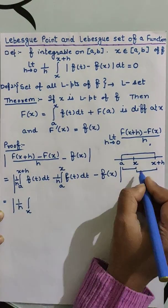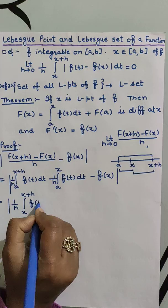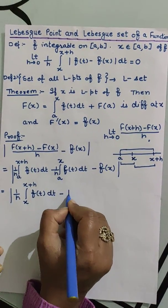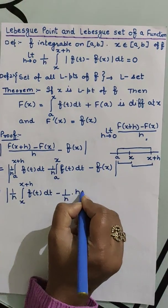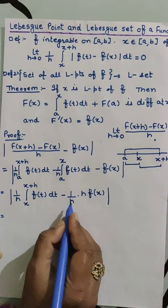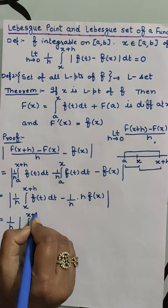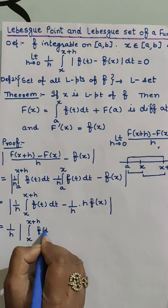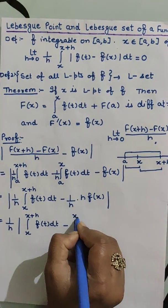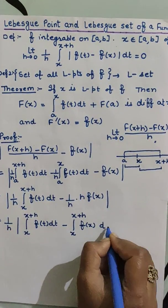x to x+h. So this is (1/h)∫[x to x+h] f(t)dt. Now I can write f(x) as (1/h)·h·f(x), so I'll take 1/h common and inside I can write this f(x) as ∫[x to x+h] f(x)dt